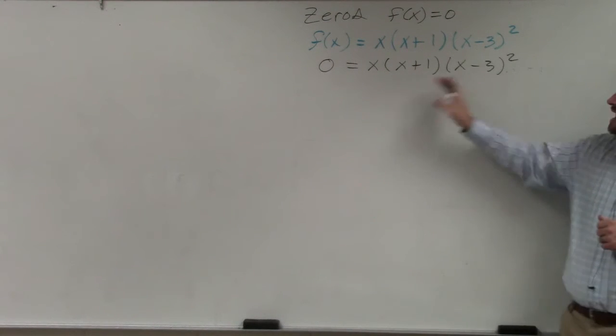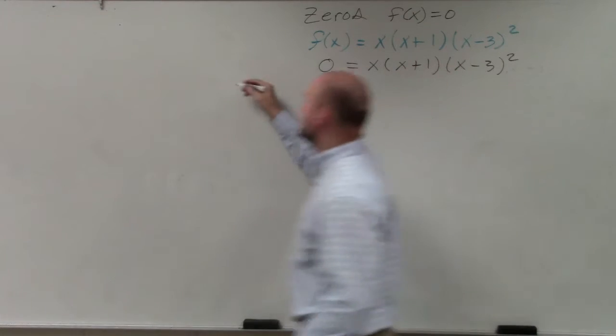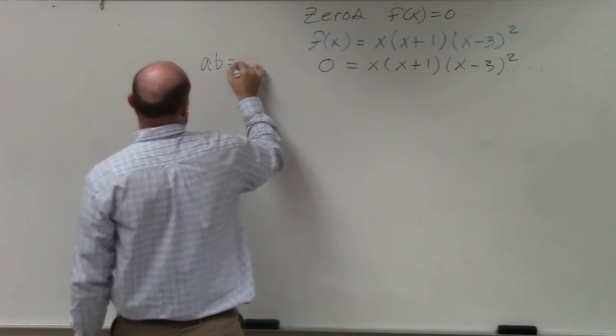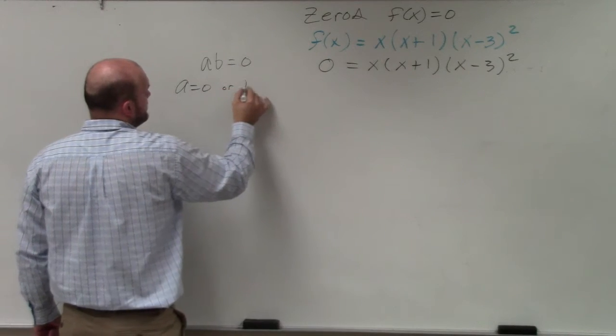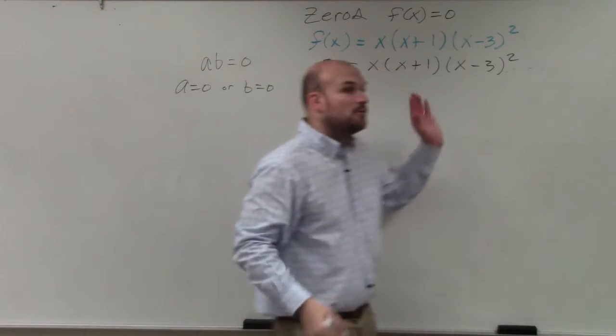So now what we can do is apply the zero product property, which in Algebra 2 we talked about. If you have a times b equals 0, that means a equals 0 or b equals 0. That works for expressions.